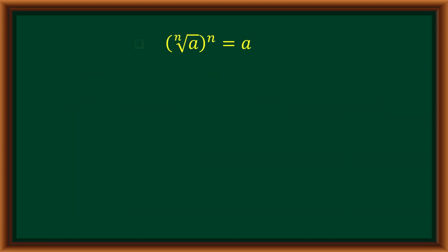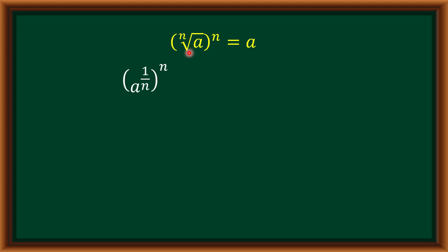Let's begin with our first law, which says that the nth root of a raised to n is equal to a. It means the index and the exponent should be equal. If that is the case, then whatever the radical base is, that will be the answer. In exponential form, this is a raised to 1 over n, raised to n. Applying the laws of exponents, we multiply the two exponents to get a raised to n over n, and n divided by n gives us 1, which means we have a raised to 1, or simply a.